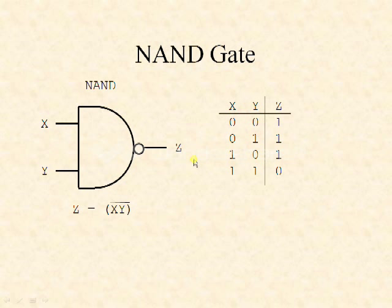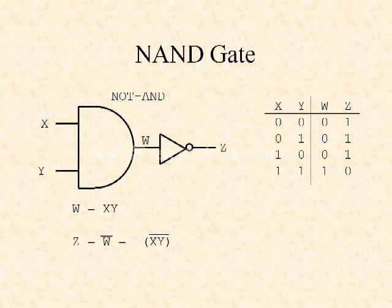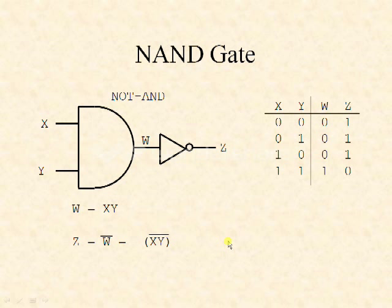We can also represent the NAND gate in another way. NOT plus AND is nothing but a NAND gate. The output expression for W is xy and the output expression for z is W bar, which is nothing but xy whole bar. So this is the alternate representation of a NAND gate.